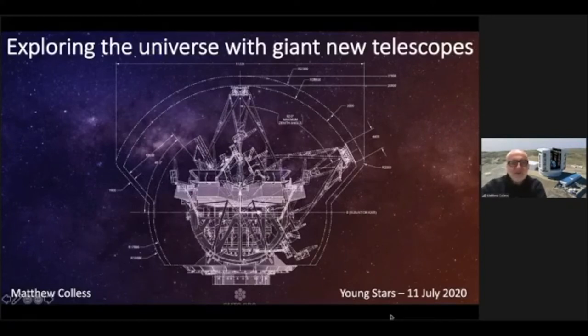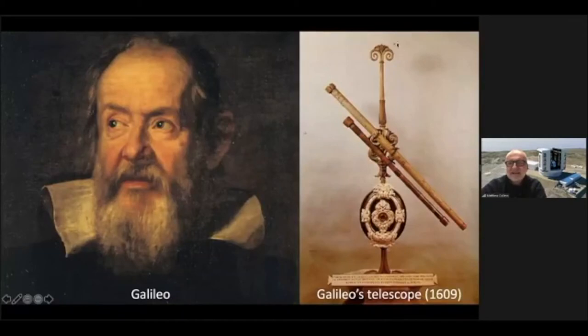We're going to be exploring the universe with giant new telescopes, but let's start not with the giant new telescopes of tomorrow, but with the very first telescope that was used to look at the sky. This is Galileo's telescope. Galileo was an Italian astronomer who was the very first person to use a telescope to look at the sky, and that was just over 400 years ago, in 1609.